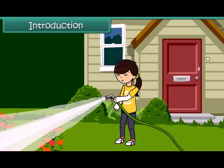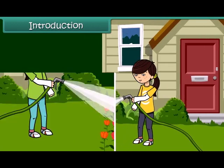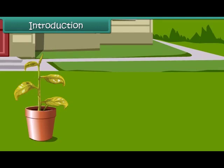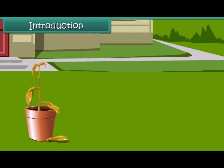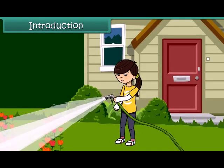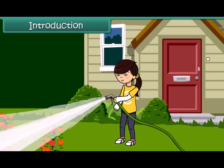Tanu waters the plants in her garden every day. She knows that if she does not do so, they will wilt and ultimately die. But she is curious to know how the water that she supplies to the roots reaches the leaves of the plants.